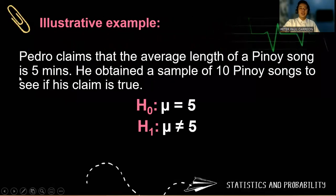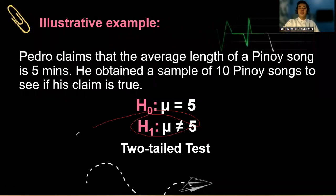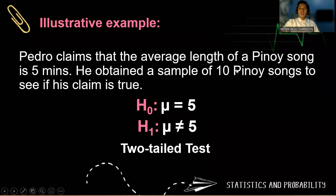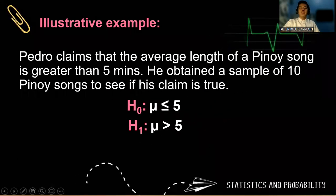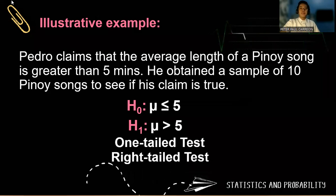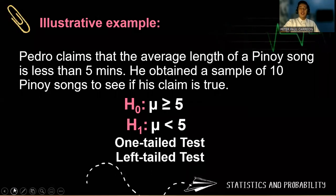So let's have an illustrative example. If Pedro claims that the average length of a pinar song is five minutes, then this is a two-tailed test. You can clearly see it on the alternative hypothesis because we are not interested in either greater than or less than. However, if Pedro claims that it is greater than five minutes, then the alternative hypothesis becomes greater than. So obviously, we have a one-tailed, right-tailed test. Making it less than would mean we have a one-tailed and a left-tailed test.